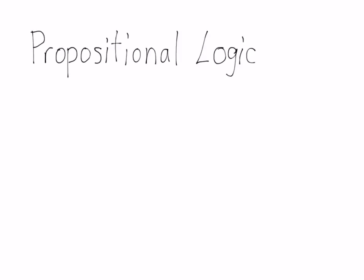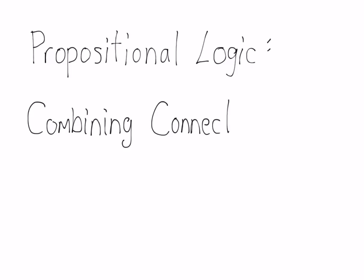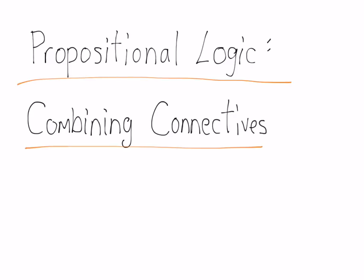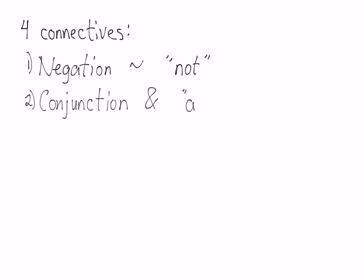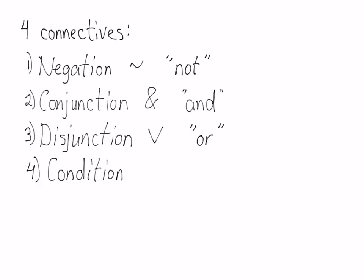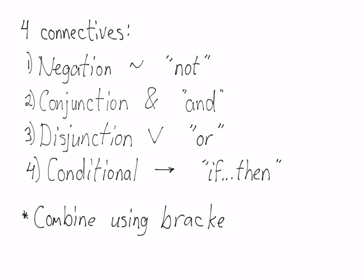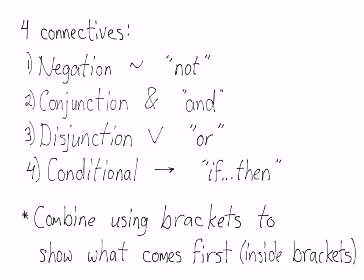In this video, you'll know how to combine connectives in propositional logic. Remember, there are four connectives: negation, indicated by the tilde and pronounced NOT; conjunction, which is an ampersand and is pronounced AND; disjunction, which is a V and is said as OR; and then there's a conditional, which looks like an arrow and is pronounced IF-THEN.